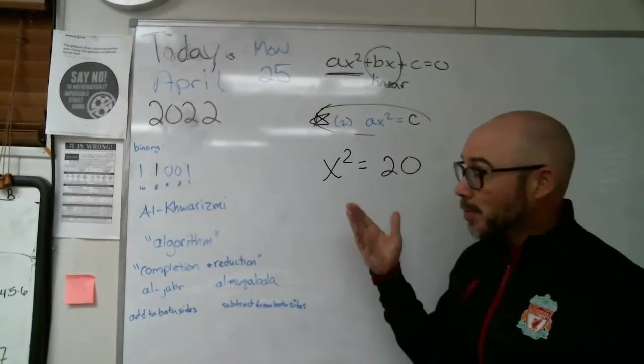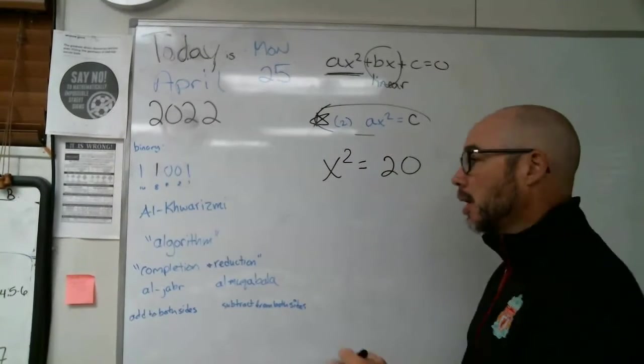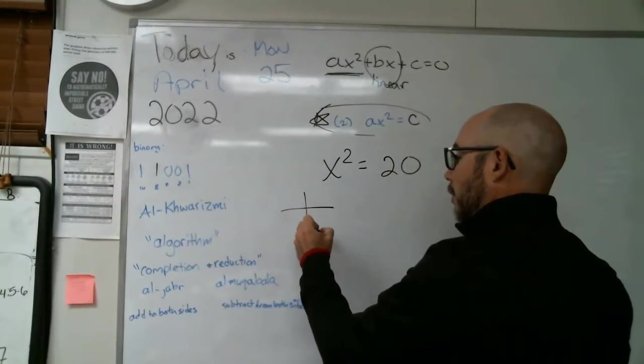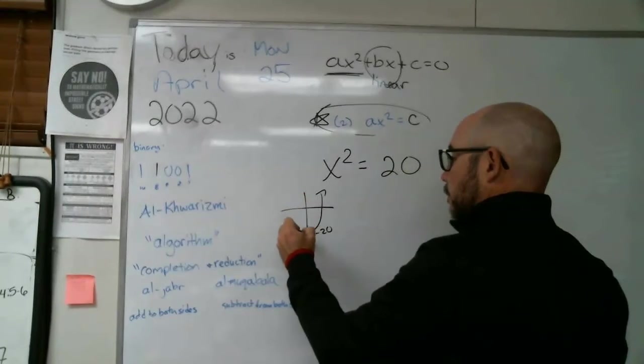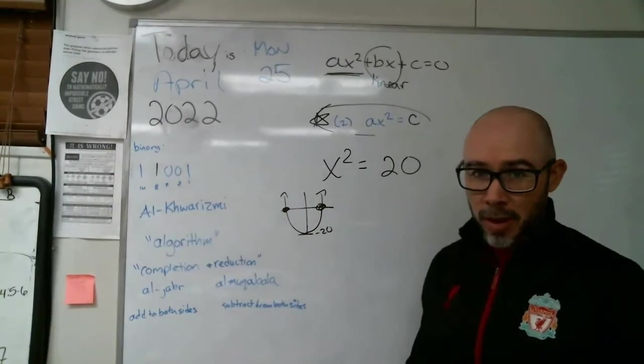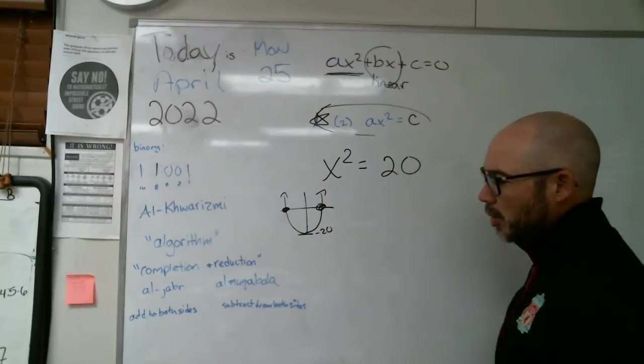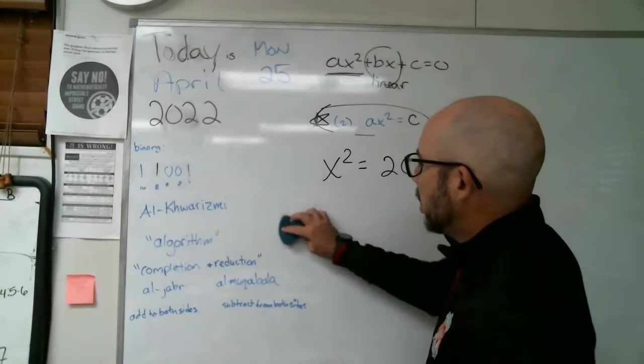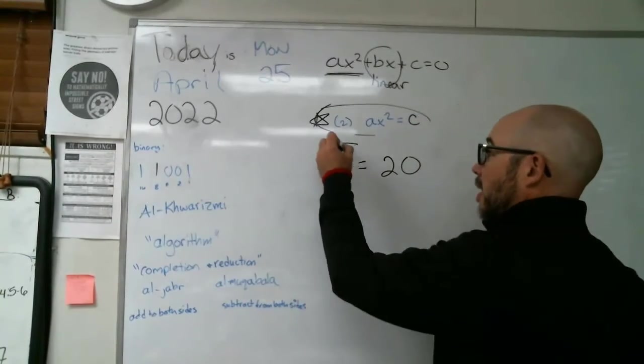All right. Now, how do we solve a problem like this? Because this definitely could happen. This is a problem that crosses at negative 20. And we're looking for the solutions, right? We're looking for where that parabola crosses the x-axis.